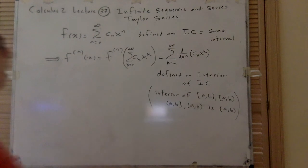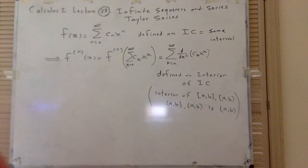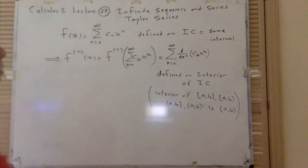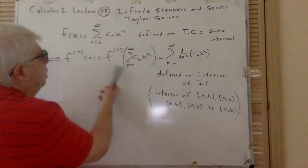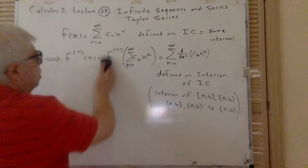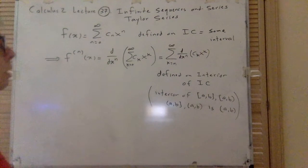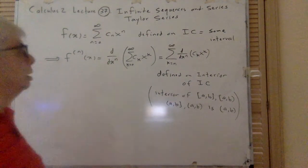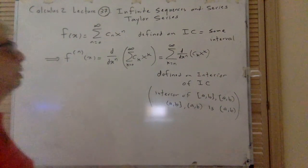We also realized that on the interior of IC — if I have any of these intervals, the interior is in fact (A, B) — on that interior we can find the derivative of any degree. In fact, it means that the derivative can go inside the summation, like it commutes with the summation, and this happens for any x in the interior of that interval of convergence.